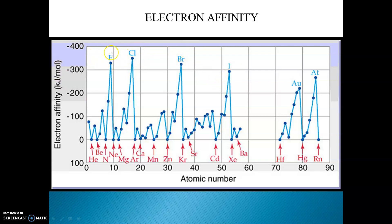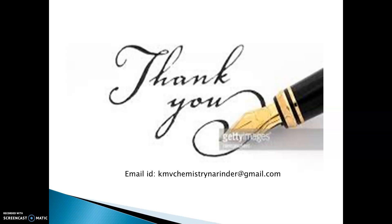Comparing halogens, fluorine has less electron affinity than chlorine, bromine, and iodine. For pseudo-filled, half-filled, and fully-filled configurations, electron affinities are zero because these configurations are more stable, so the addition of electrons in these configurations is quite difficult. Thank you so much.